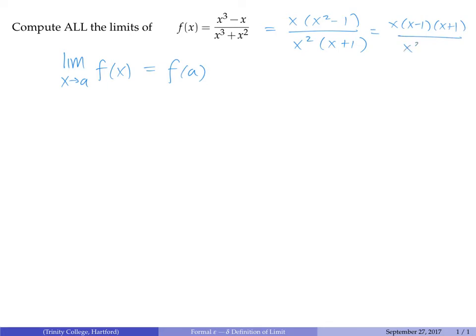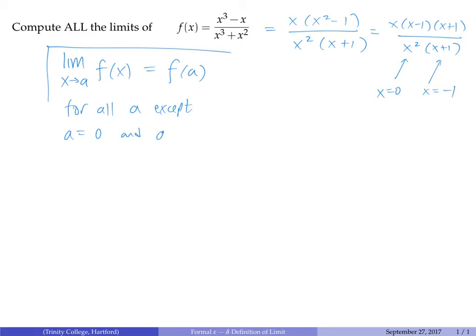On the bottom we have two copies of x and one copy of (x+1). The only x values that give us trouble are the ones that make the terms in the denominator zero. If x is zero the whole denominator will be zero, or if x is minus 1 the whole denominator will be zero. So we can now conclude the value of every single limit except at these two points — a equals zero and a equals minus 1.